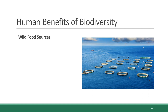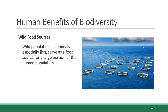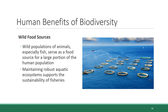The third and final major benefit of biodiversity is the provision of wild food sources from diverse ecosystems. Wild populations of fish serve as a major food source for a large portion of the human population. About half of fish are still wild-caught, and many fish in fish farms are actually fed wild fish. So maintaining robust aquatic ecosystems supports the sustainability of fisheries and their role as a food source for humans.